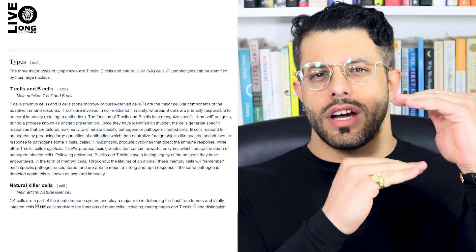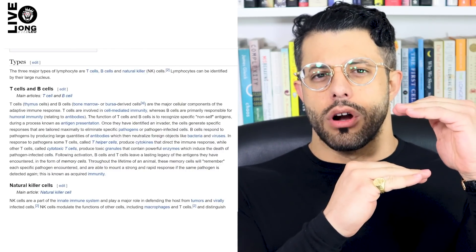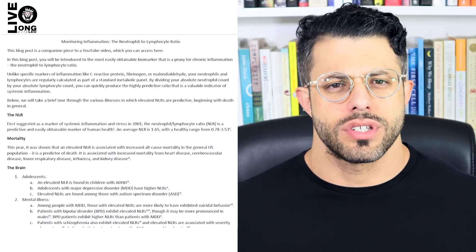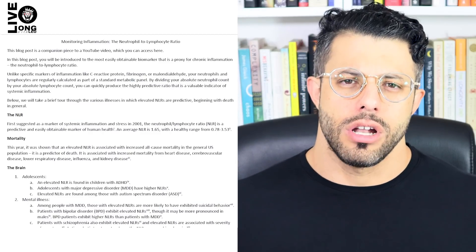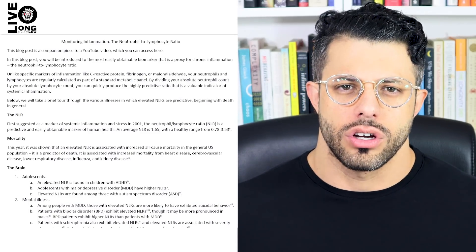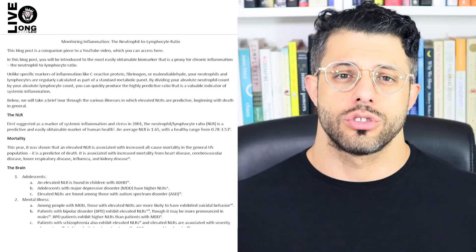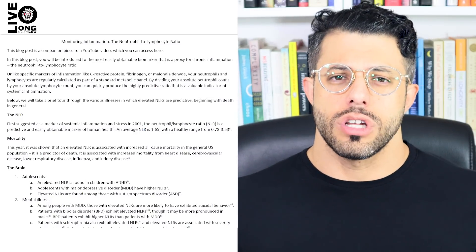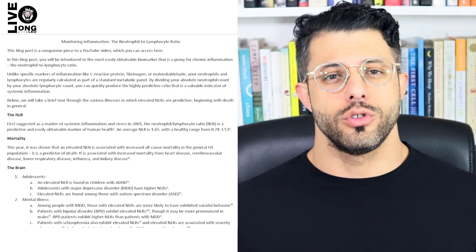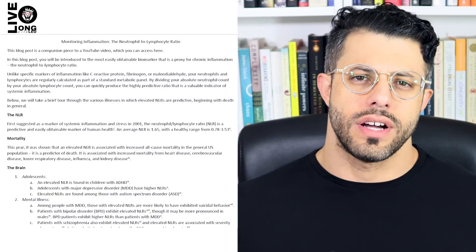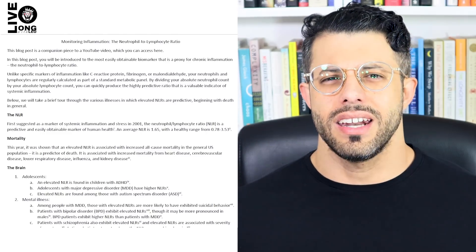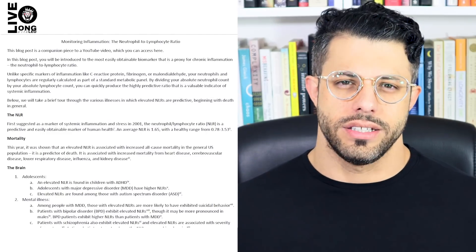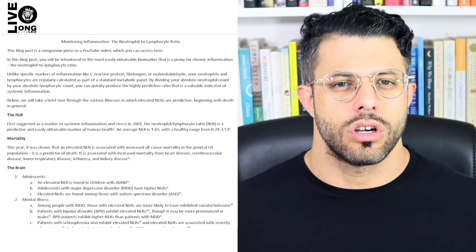Really, neutrophils represent non-specific inflammatory responses from your immune system, whereas lymphocytes represent very specific targeted responses — to bacterial or viral infections, or to cancers and tumors. So it's a non-specific marker divided by a specific marker. You'll find both the absolute number of neutrophils and lymphocytes in your regular metabolic panel; all you do is divide neutrophils by lymphocytes to get the NLR.